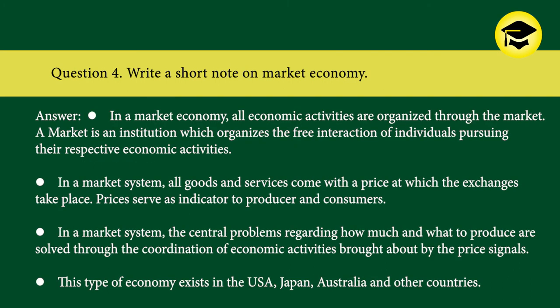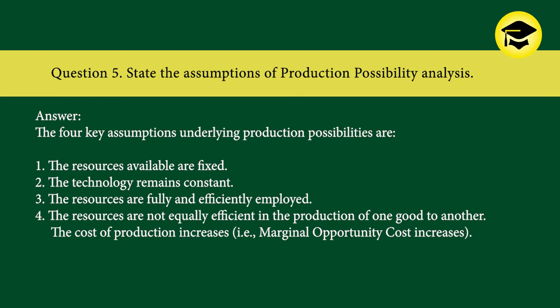Question 4: Write a short note on market economy. Answer: In a market economy, all economic activities are organized through the market. The market is an institution which organizes the free interaction of individuals pursuing their respective economic activities. In a market system, all goods and services come with a price at which exchanges take place; prices serve as indicators to producers and consumers. The central problems regarding how much and what to produce are solved through the coordination of economic activities brought about by price signals.